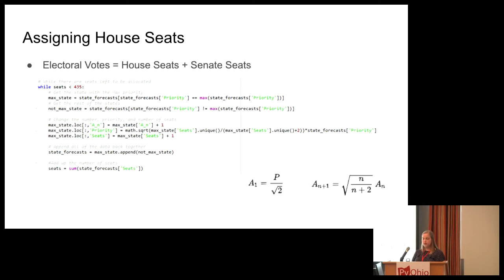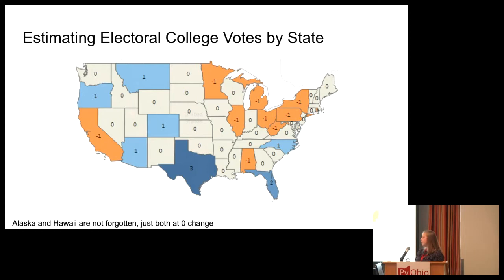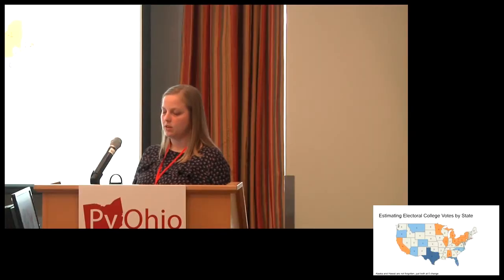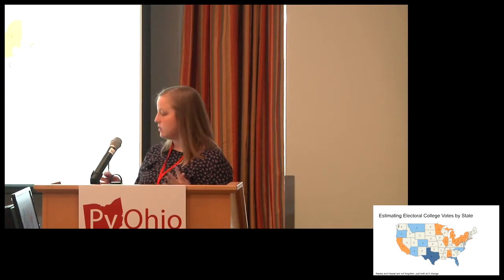Electoral votes are your house seats plus senate seats — every state gets two senate seats. So once we assign the house seats, we just add two to get the estimated electoral votes. Alaska and Hawaii are not forgotten — they're there, they just had zero change, so I didn't visualize them. In summary: we scraped the data using Beautiful Soup, used auto-arima from R to generate forecasts of 2020 population by state, and then used Python functions to estimate electoral college votes.